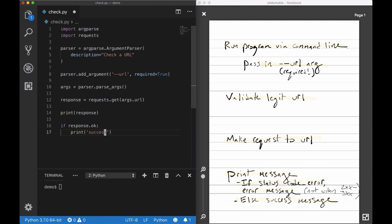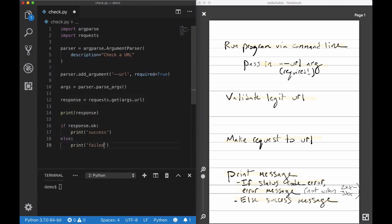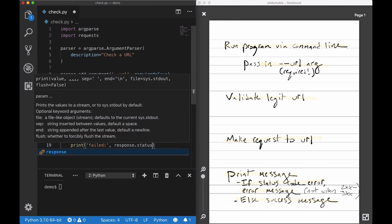So if that's the case, we're going to print success, and otherwise we're going to print failed and print out the status code that it failed with.